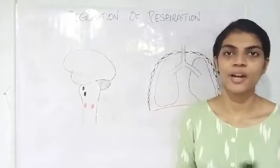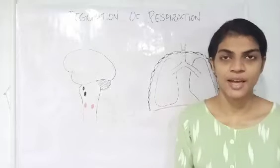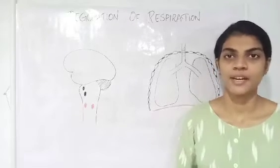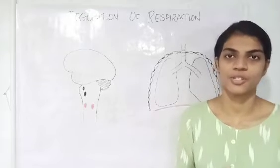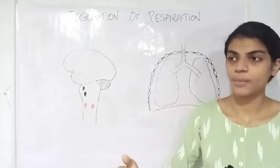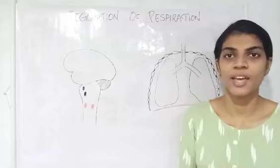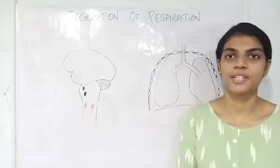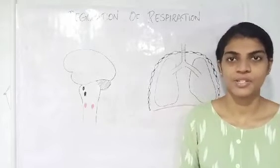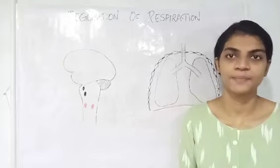This video is about regulation of respiration. Respiration is a reflex process — in most cases it happens involuntarily. However, in some cases it can be voluntary, such as when a person holds their breath. If a person is having an outburst of emotions or is exercising, the rate of respiration increases, so depending on the physiological condition the rate and depth of respiration can vary.